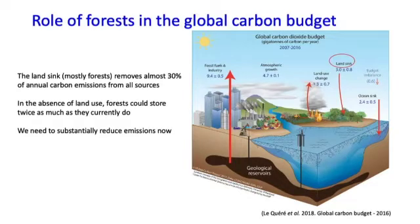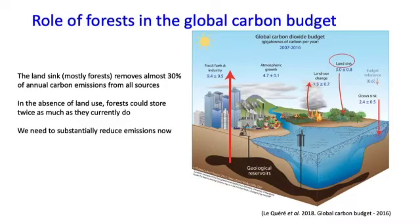The amount of carbon that's in land plants and in the soil is close to that that's in the atmosphere. Forests take up almost 30% of the carbon emissions from all sources annually, so that's really important. We need to reduce emissions now substantially, and we need to find ways to do that which are quick and cost effective.